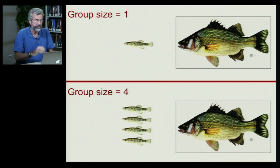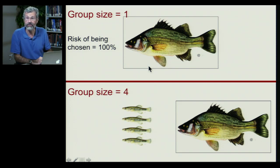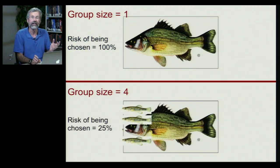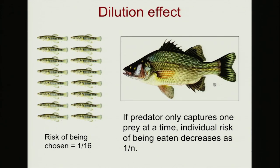Here's a simple example. We have a fish that is a predator and it wants to eat a little fish. If the little fish is all by itself and encounters a predator, its risk of being chosen is really high — like 100%. But if you're in a group of four and the predator can only grab one, your individual risk is only one in four. So there's a big advantage to avoiding predation by living in a group. If the predator can only choose one prey at a time, your individual risk decreases as 1/N with the size of the group.